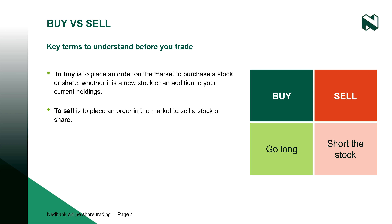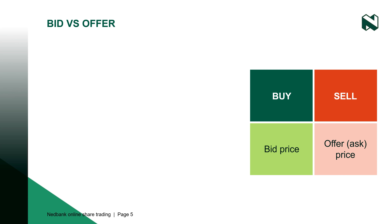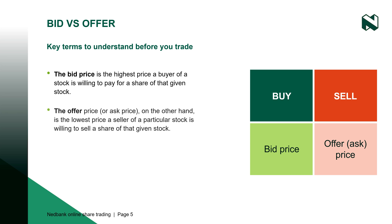Before placing a trade, there are a number of key terms you need to understand. Firstly, let's define buy and sell. To buy is to place an order on the market to purchase a stock or share, whether it is a new stock or in addition to your current holdings. Another term for buying is to go long on a stock. This terminology is used most often when trading on the derivatives market.